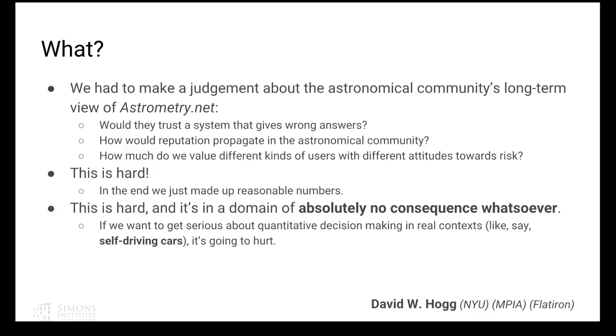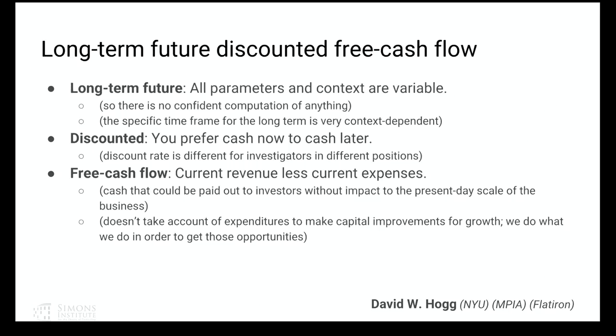It is very hard to make a utility function, and this is in a domain of absolutely no consequence. If you go into a domain of consequence — we were hearing about self-driving cars — then you really have to think about what your utility function is. This is really non-trivial. You can't just sit in your Bayesian tower and say 'it's highly probable that's a stop sign.'